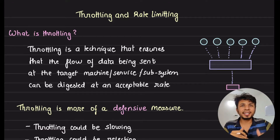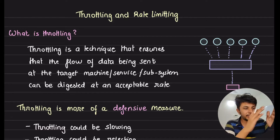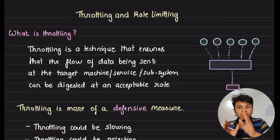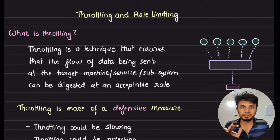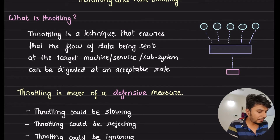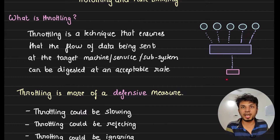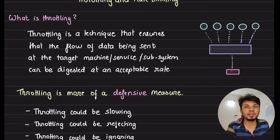Throttling is a technique that ensures the flow of data, requests, or anything sent to a target system is sent at a rate acceptable to the target system. This ensures the target system does not go down when there are many users or subsystems trying to send data to one target machine, preventing it from being overwhelmed by the number of requests.